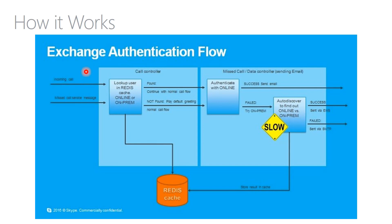In this first block, we can see that an incoming call lands in the Azure Voicemail system. At this time, Azure Voicemail looks in its cache to see if there are any custom voicemail recordings for this caller's mailbox. Also cached is all of the EWS authentication information. If the voicemail or cache information is found, it is played, then the caller is disconnected and processing continues.